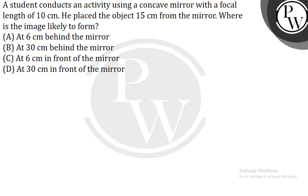Using a concave mirror with a focal length of 10 centimeters, he placed the object 15 centimeters from the mirror. Where is the image likely to form? So our focal length f equals 10 and u equals minus 15.